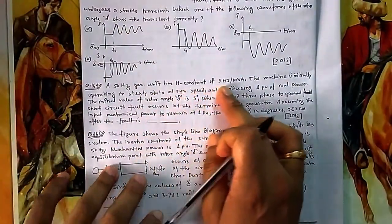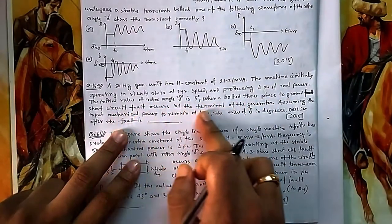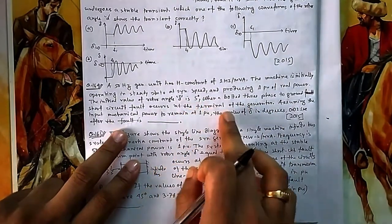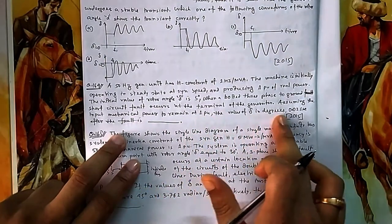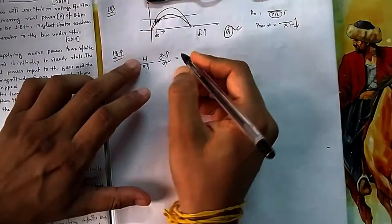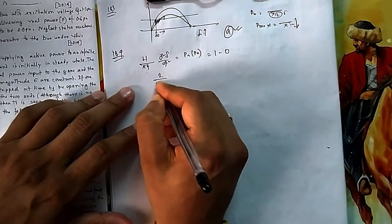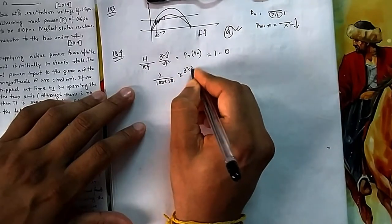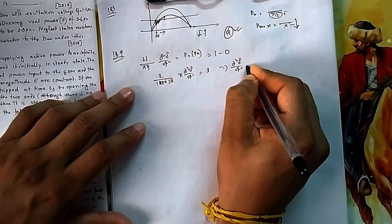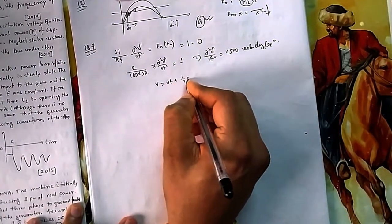Question 164: A 50 Hz generator with inertia constant H is initially operating at steady state producing 1 pu real power with initial rotor angle δ₀ = 5 degrees. A three-phase fault occurs at the terminal. During the fault the electrical output is zero, so accelerating power = 1 pu. The swing equation gives d²δ/dt² = (180f/H)·P_acc = 4500 electrical degrees per second squared.